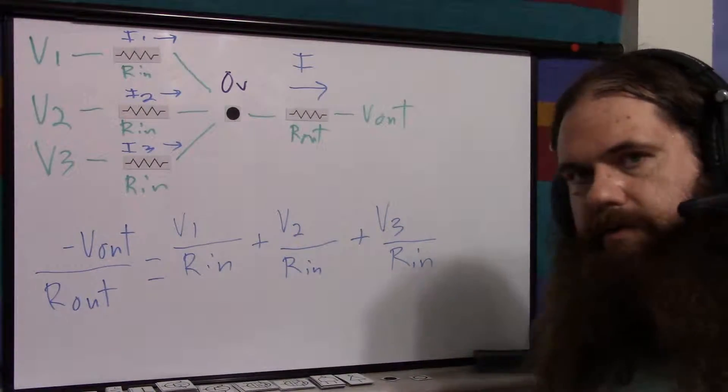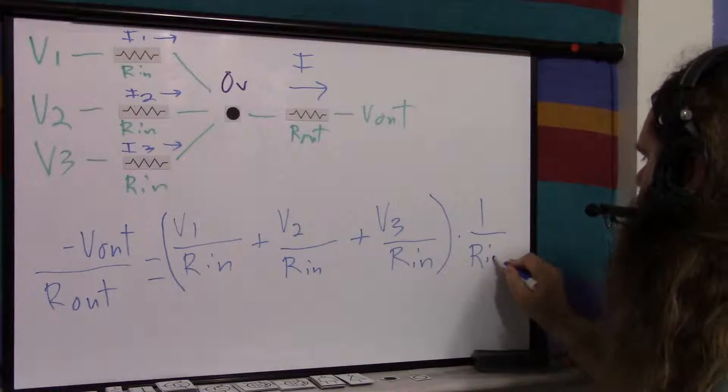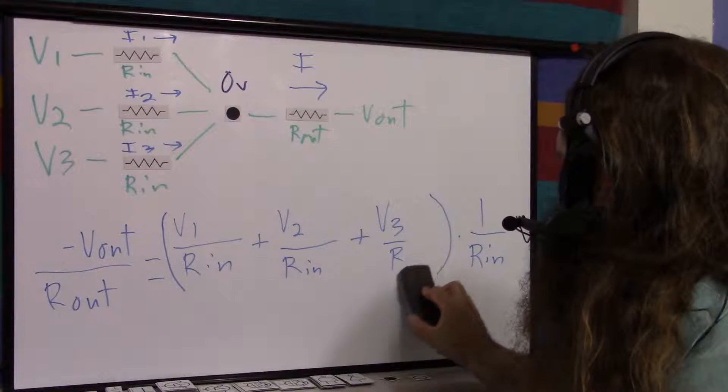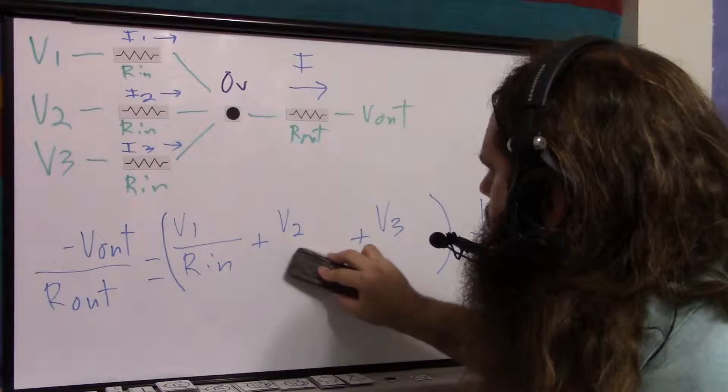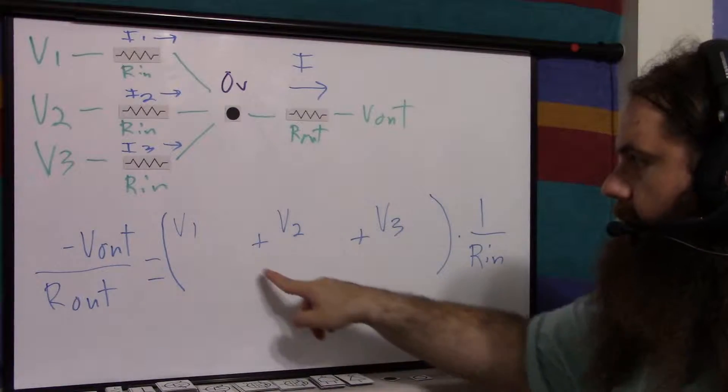We can separate out this R in. I can take this whole thing times 1 over R in. And now we just have the sum of the voltages in here. It's just the reverse of distributing a multiplication. See, the 1 over R in is here instead of there.